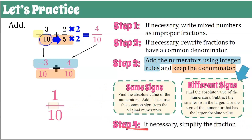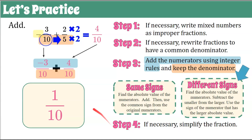Step four: if necessary, simplify the fraction. One-tenth is already in simplest form, so step four is not necessary. Therefore, negative three-tenths plus two-fifths equals one-tenth.